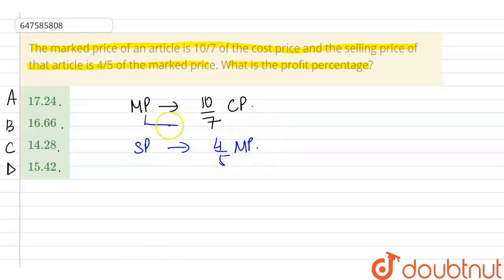Ye joh mark price ki value hai, ya haan substitute kar lenge, right? So, hush se hum SP kae mil jayega. SP mil jayega 4 by 5 into 10 by 7 times of CP. CP mein mil jayega.